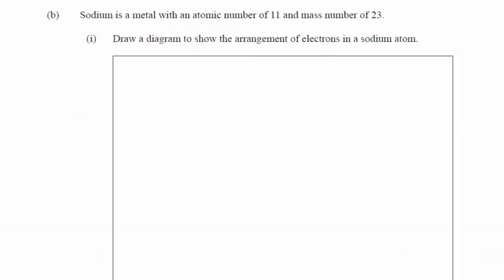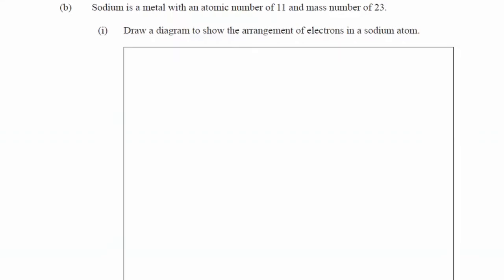Part B, sodium is a metal with an atomic number of 11 and mass number of 23. Part one, draw a diagram to show the arrangement of electrons in a sodium atom. So, it's very important. They've given the mass number. So, it means that we're going to use that to determine the proton number.